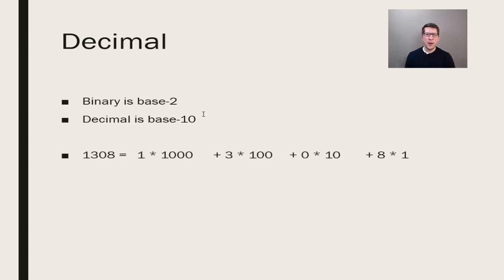Notice we can rewrite this as 1 times 1000, 3 times 100, 0 times 10, and 8 times 1. The sum of those four numbers equals 1308.